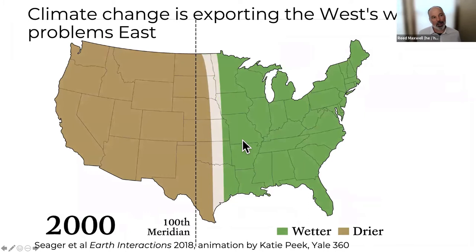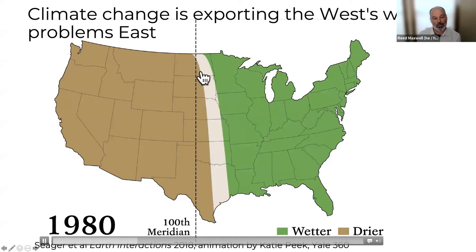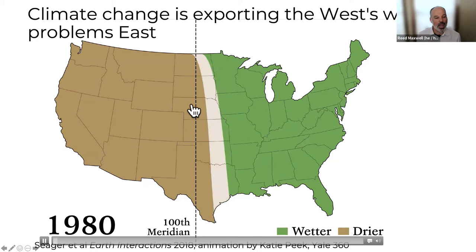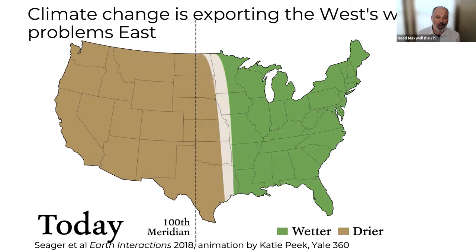Everywhere is also impacted by climate change. One interesting impact is migration of the so-called 100th Meridian, which has classically been used to separate arid and more humid components of the country. Work by Seeger et al. published in Earth Interactions in 2018 — illustrated in an animation from Yale 360 — shows our definition of the 100th Meridian has migrated. Climate change is exporting the West's water problems eastward.